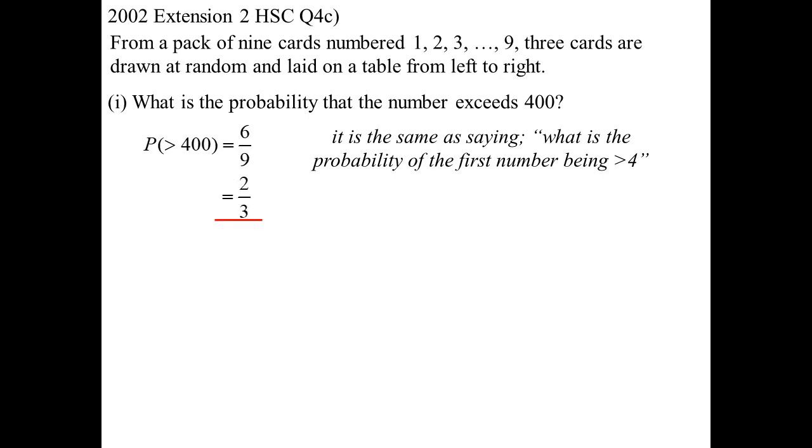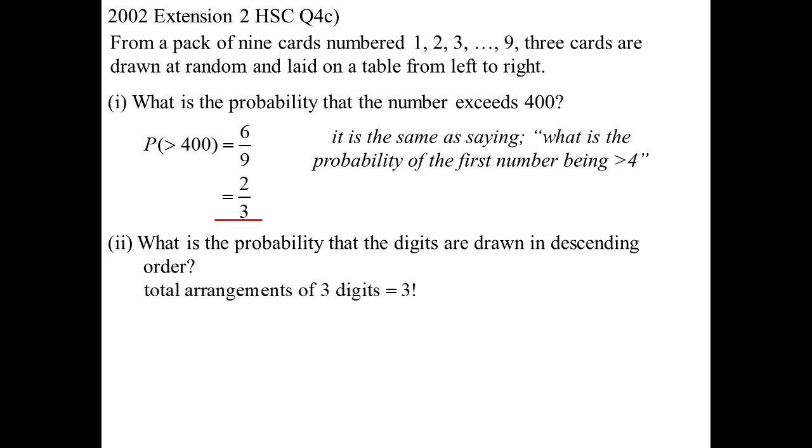What's the probability that the digits are drawn in descending order? Doesn't necessarily mean consecutive. So you could go 9, 3, 1. But the digits are drawn in descending order. We know the total number of arrangements of the digits would be three factorial, which is six, by the way.